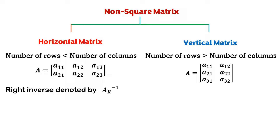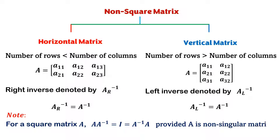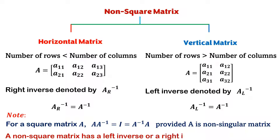A horizontal matrix has only a right inverse, denoted by A-R-inverse, while a vertical matrix has only a left inverse, denoted by A-L-inverse. So for a horizontal matrix, the right inverse is the inverse of the matrix, while for a vertical matrix, the left inverse is the inverse of the matrix. One important thing to note is that the inverse of a non-square matrix is somewhat different from the inverse of a square matrix. For a square matrix, A into A-inverse equals the identity, provided A is non-singular, whereas a non-square matrix has only a left or right inverse.